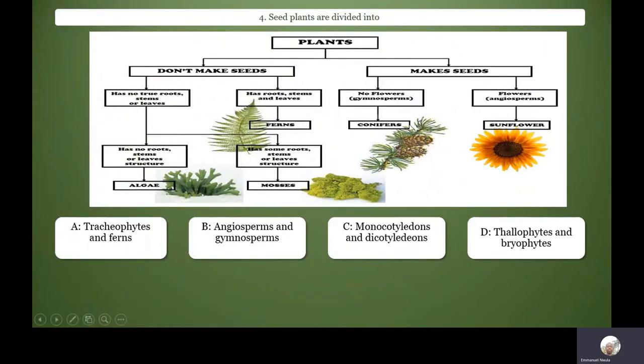Seed plants are divided into angiosperms and gymnosperms. Of course you know plants are divided into three major divisions: Thallophytes, Bryophytes, and Tracheophytes. The thallophytes are the algae, like spirogyra. They don't have leaves or roots or stems. They are aquatic.